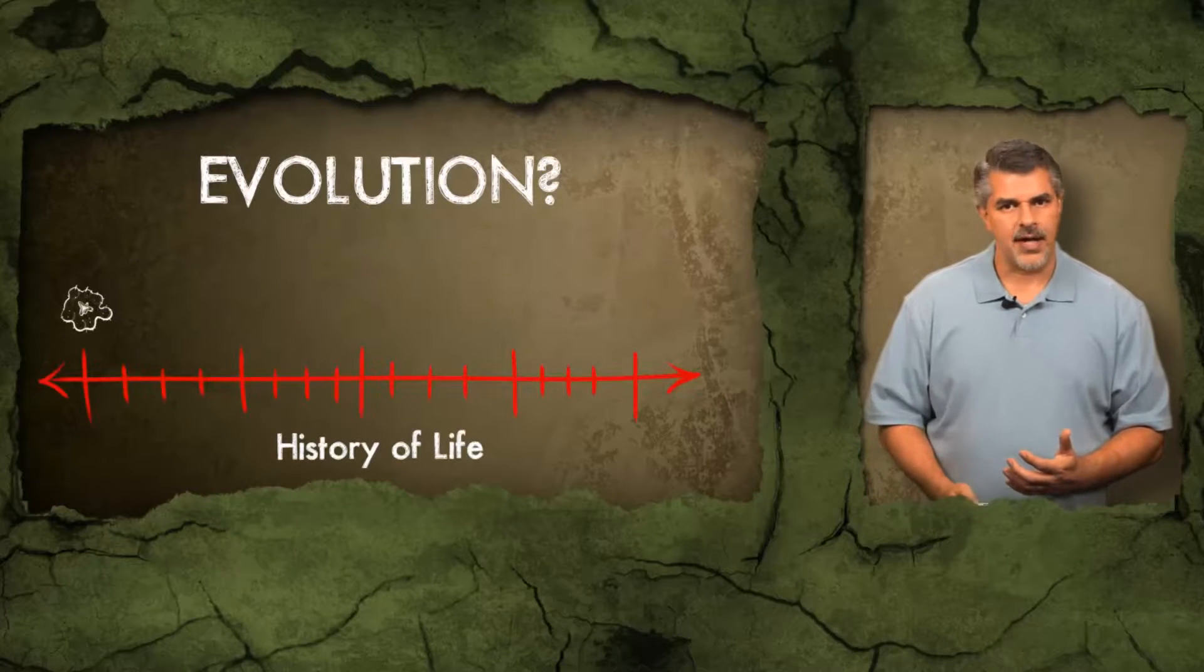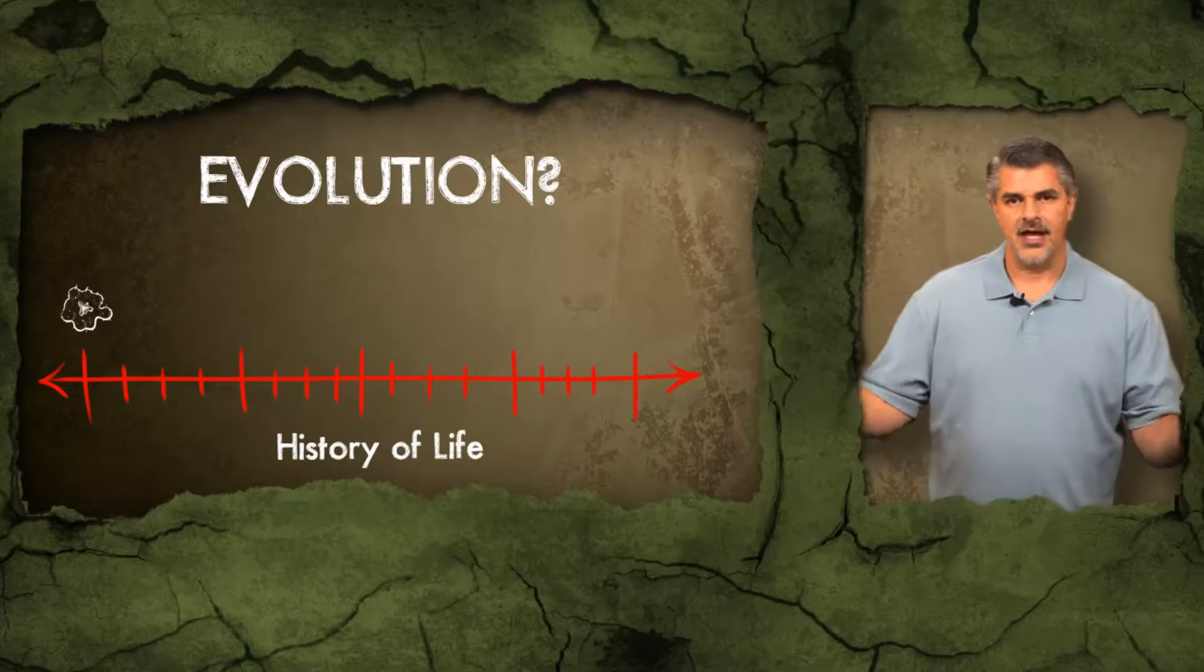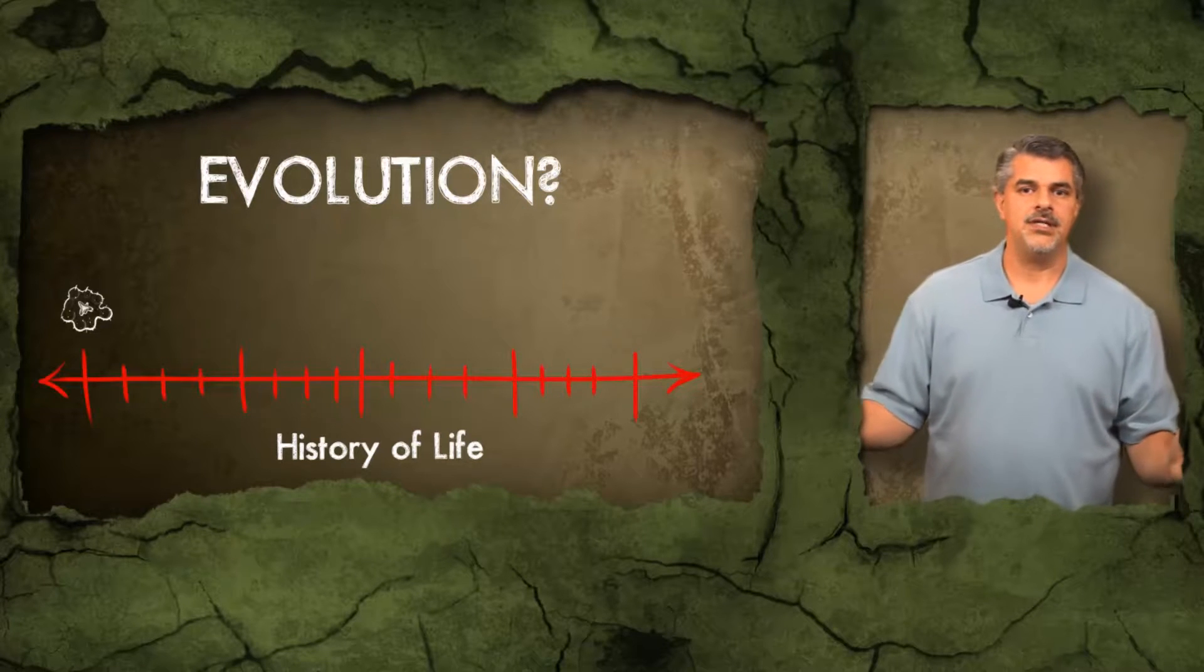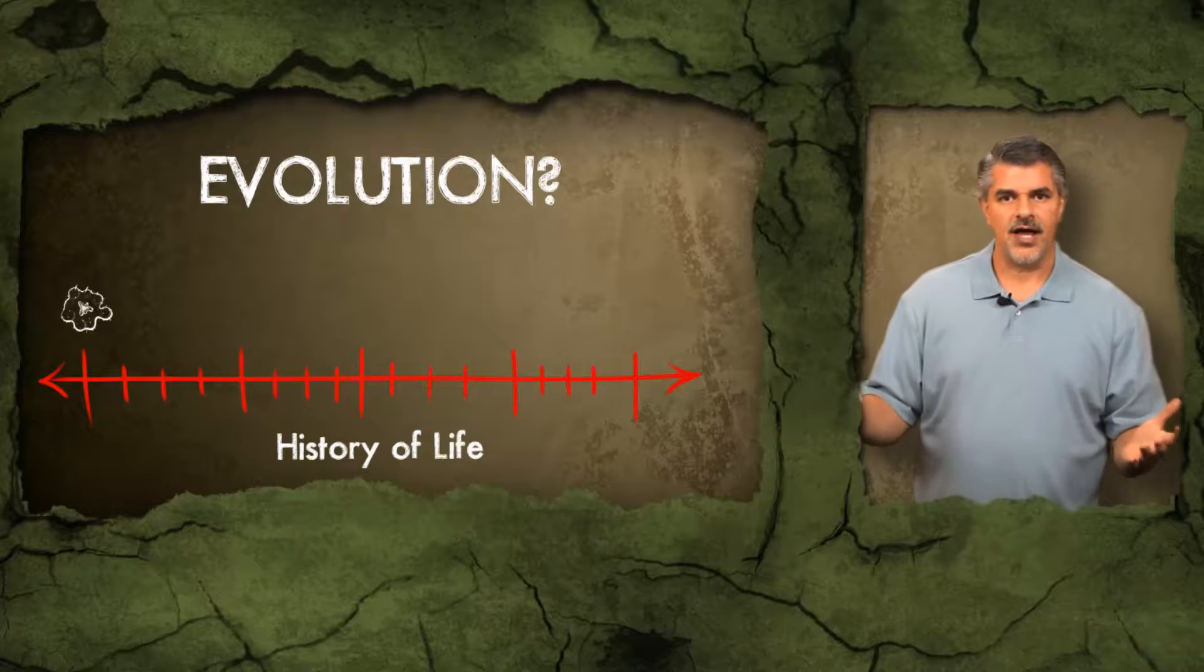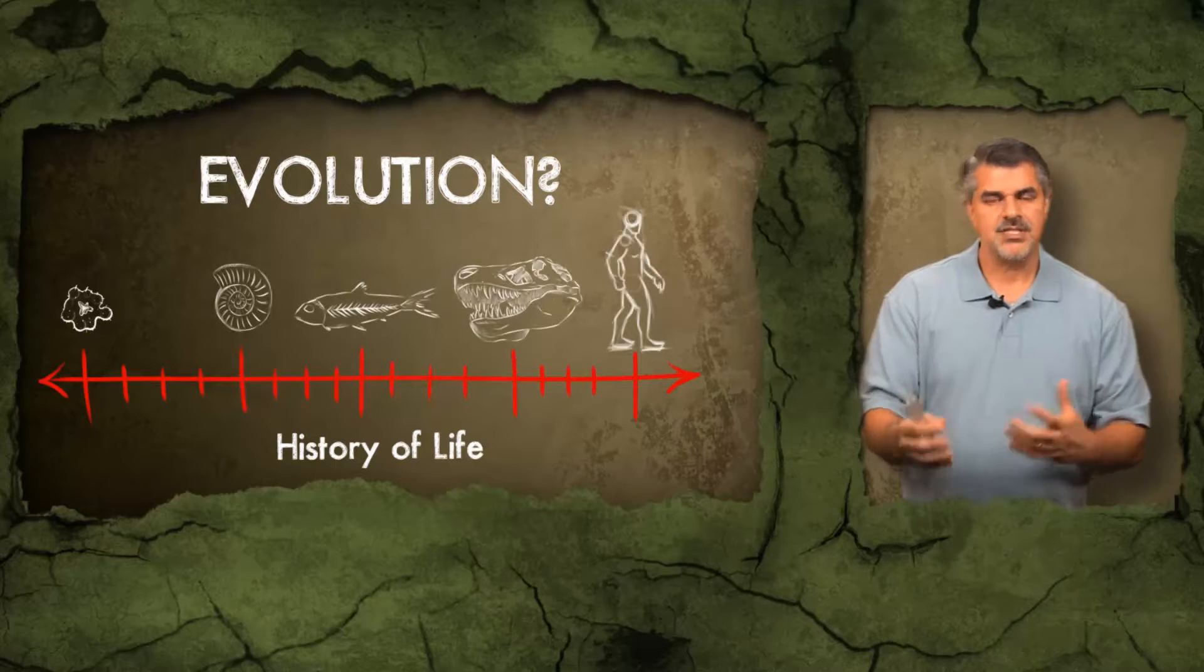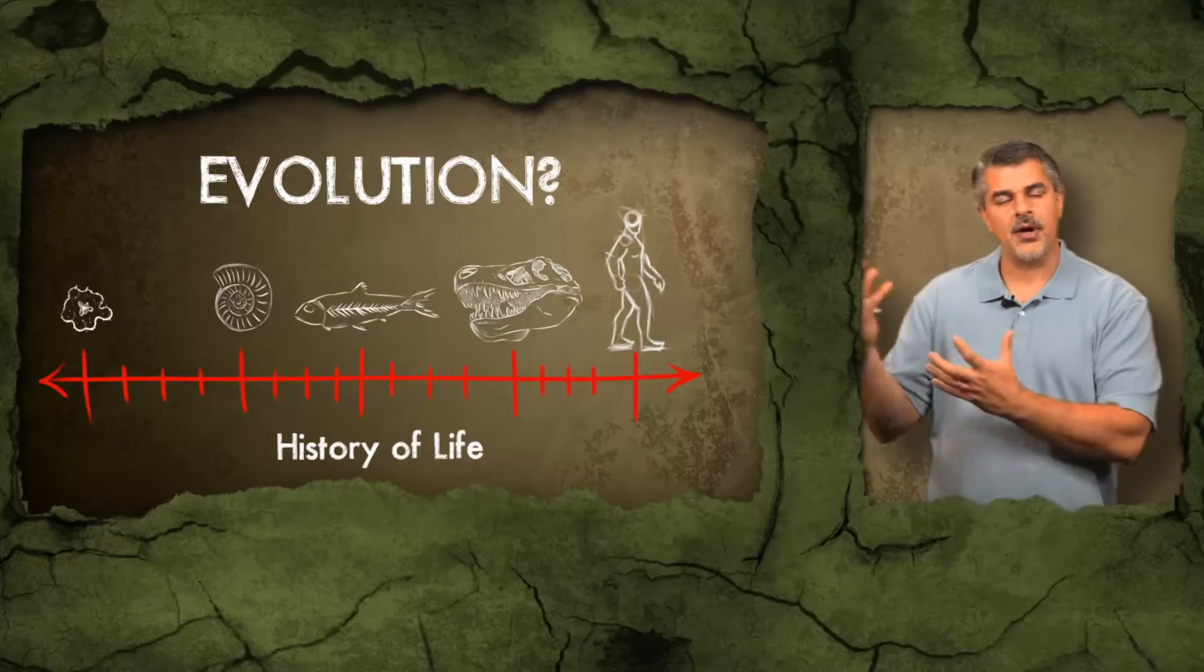Let's take the fossil record as an example. When we look at the history of life on Earth, life has been present on Earth for arguably 3.8 billion years. And it's a history of life on Earth where different time frames in Earth's history, we see different life forms. We see this progression from simple to more complex.